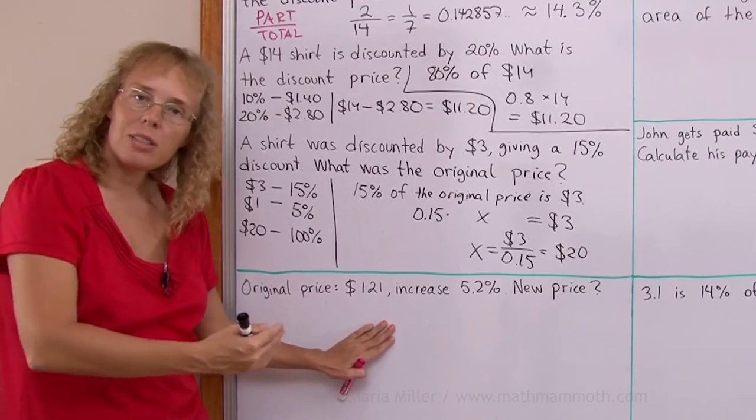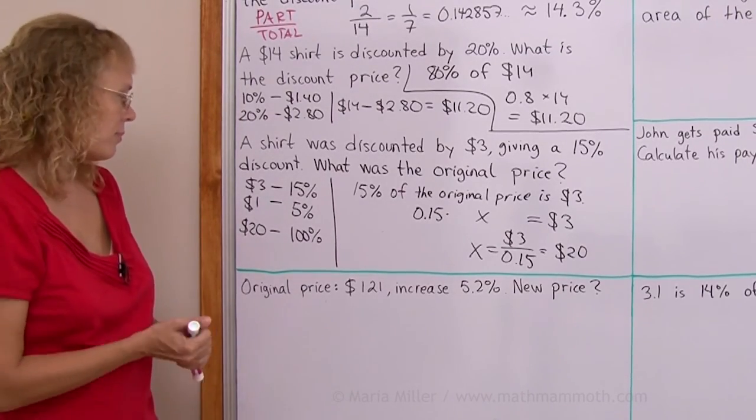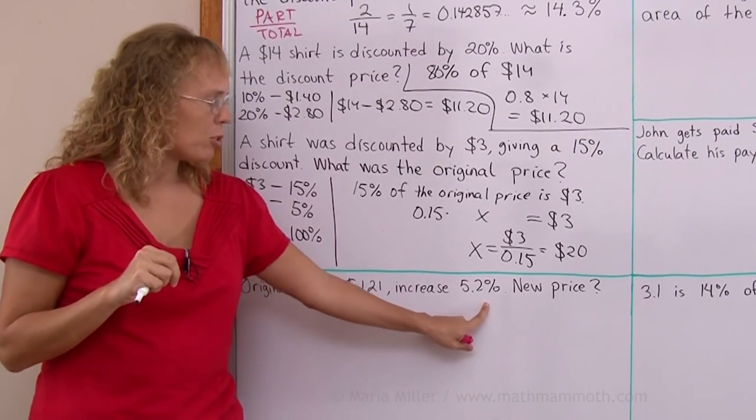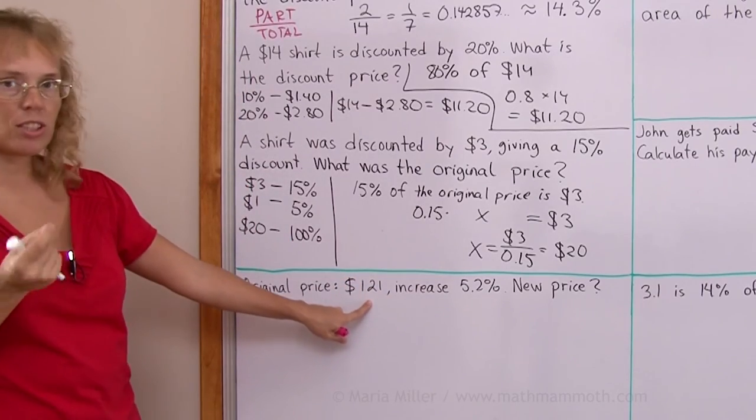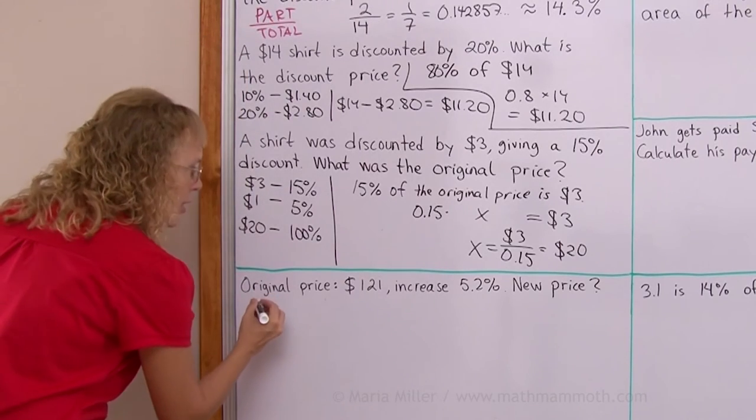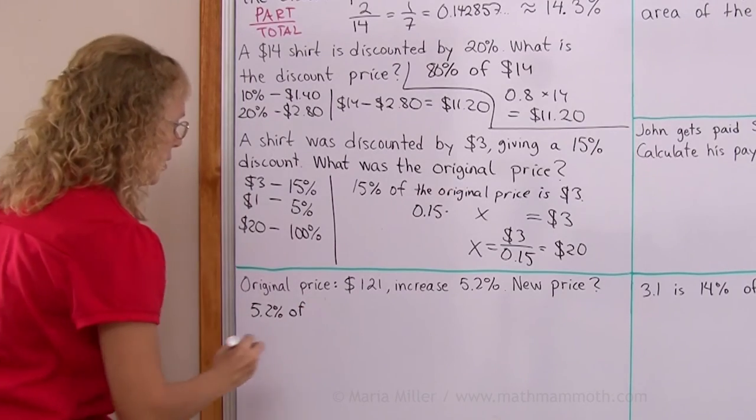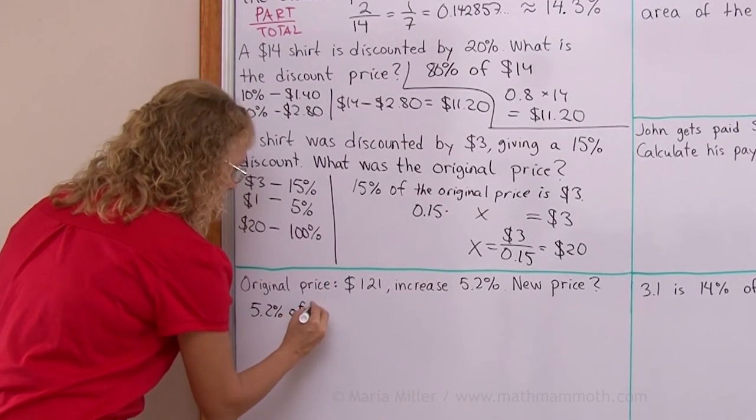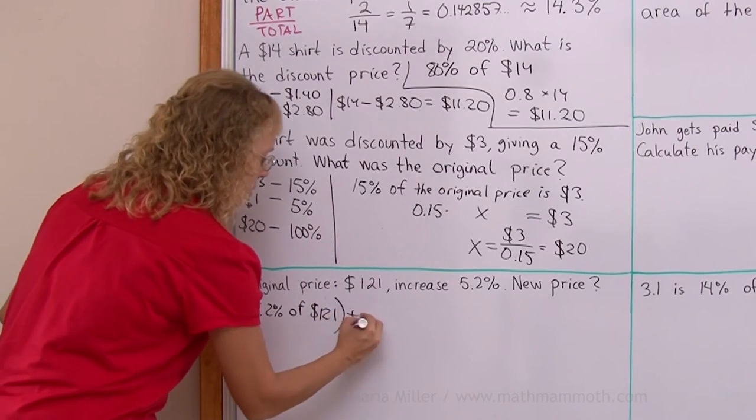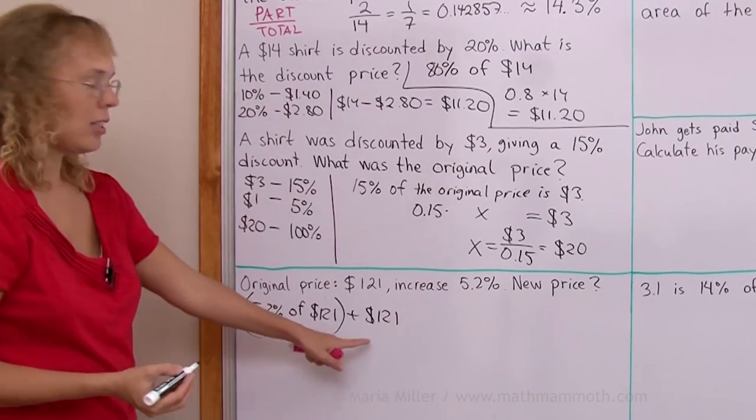Here, original price is $121 and it is increased. What's the new price? Basically, we need to calculate 5.2 percent of this original price, and then add that to $121. So basically, this is what we need to calculate. 5.2 percent of the original price, which is $121. And then whatever that is, we need to add that to the original price.